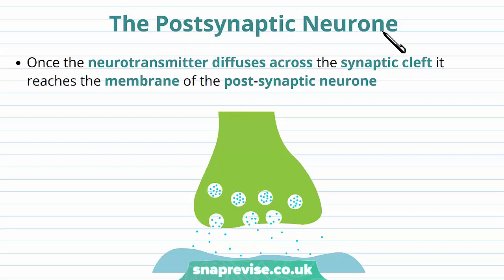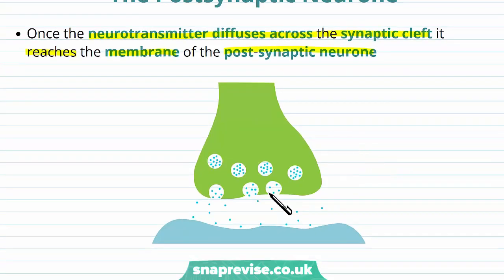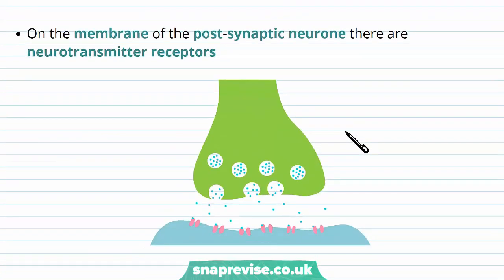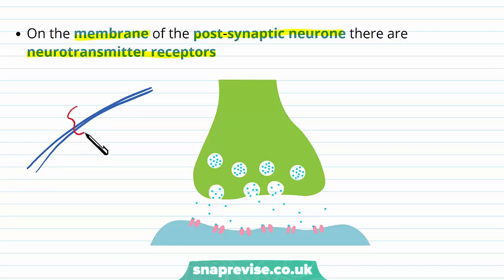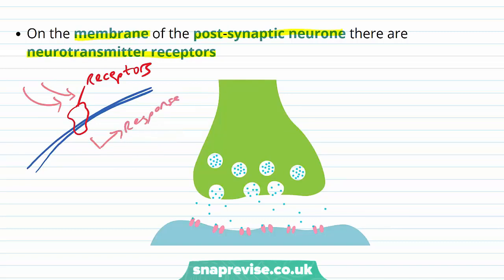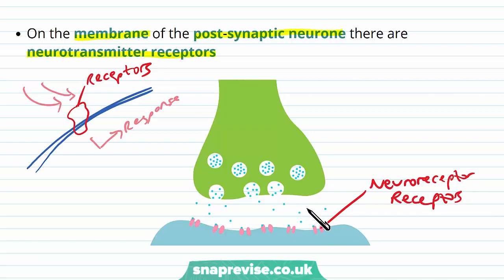The post-synaptic neuron is the last element. Once the neurotransmitter has diffused across the synaptic cleft, it reaches the cell membrane of the second cell — the post-synaptic neuron, only 20 to 30 nanometers away. On the membrane of the post-synaptic neuron facing the cleft are proteins called neurotransmitter receptors. These are proteins designed to respond to particular chemicals that bind to them and then set off a response.